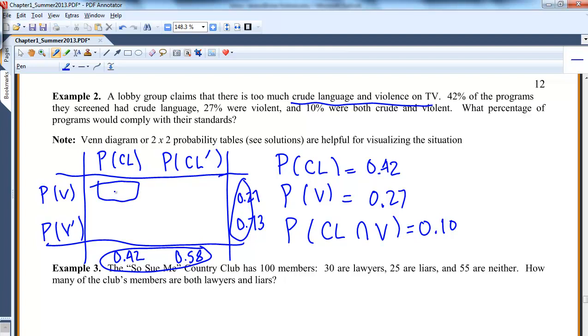This is the intersection of violence and crude language, crude language not violent, not crude language violent, and not violent not crude language. So all these are just the intersections of the events. Probability of crude language and violence is 10%, and knowing that, the rest are easy to fill in. This has to be 0.17 to add up to 0.27. This has to be 0.41, and this has to be 0.31. Wait, something's wrong. Oh, 0.32 not 0.31. Because that would be 0.42 and that would be 0.73.